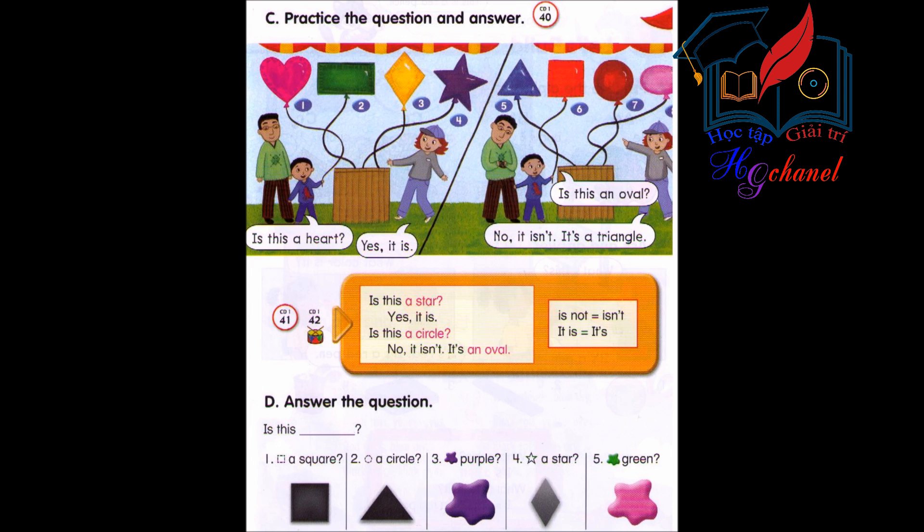Number 7. Is this a square? No, it isn't. It's a circle. Number 8. Is this a circle? No, it isn't. It's an oval.